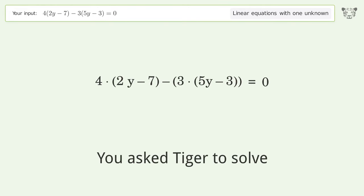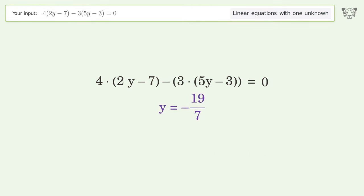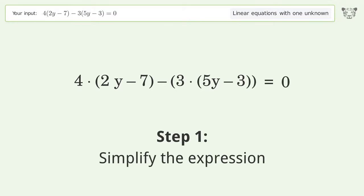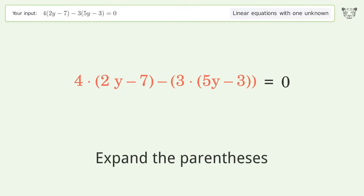You asked Tiger to solve this. This deals with linear equations with one unknown. The final result is y equals negative 19 over 7. Let's solve it step by step. Simplify the expression, expand the parentheses.